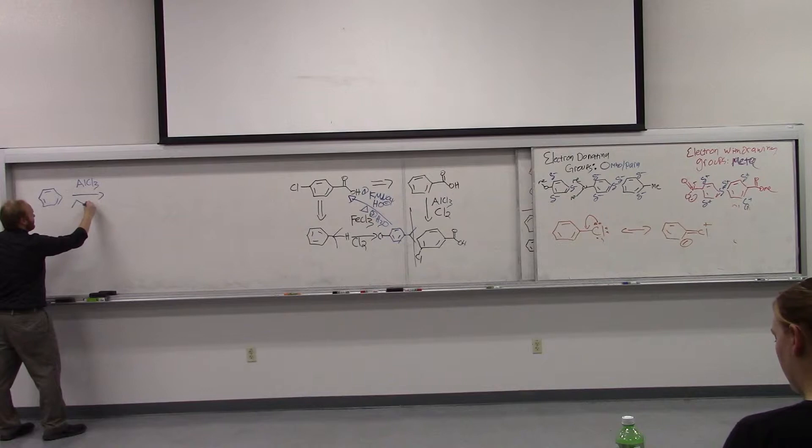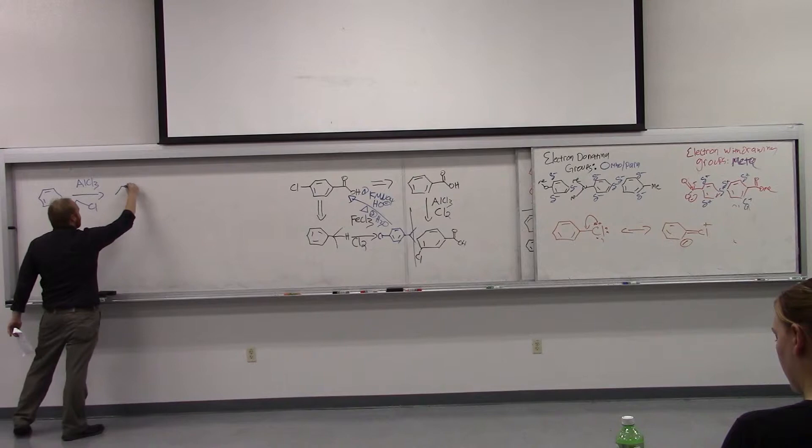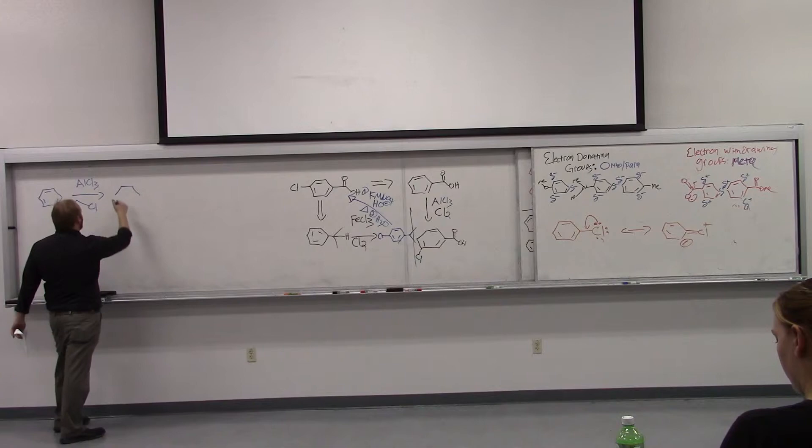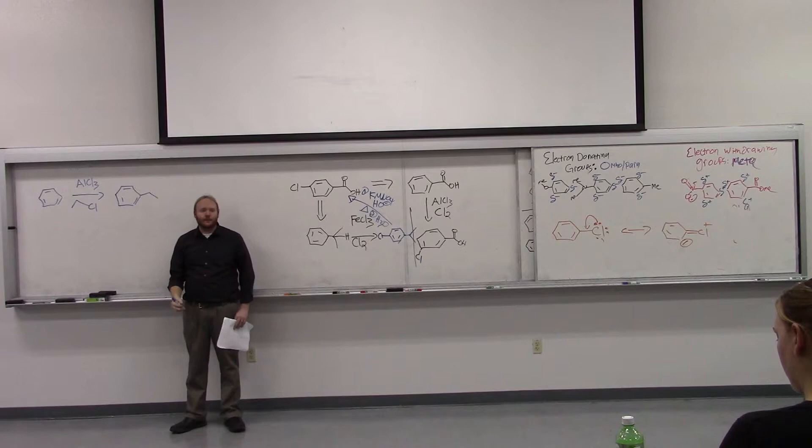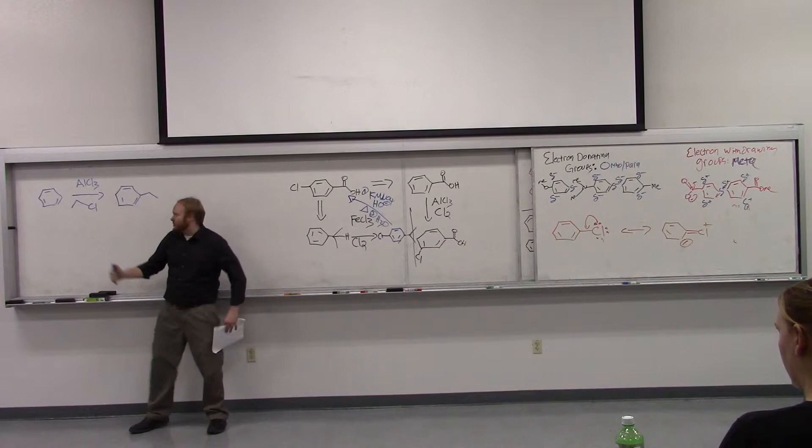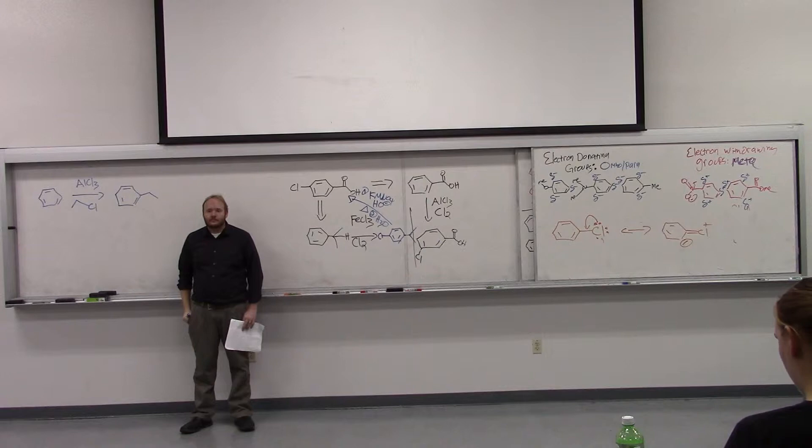So again, here are our classic Friedel-Crafts alkylation conditions. And with ethyl chloride, which is what I just drew up here, CH2CH2Cl, you know, the product you'd want to get most likely would be ethyl benzene. But here's my question. What's going to be more reactive towards electrophilic aromatic substitution? Our starting material benzene or our product ethyl benzene?